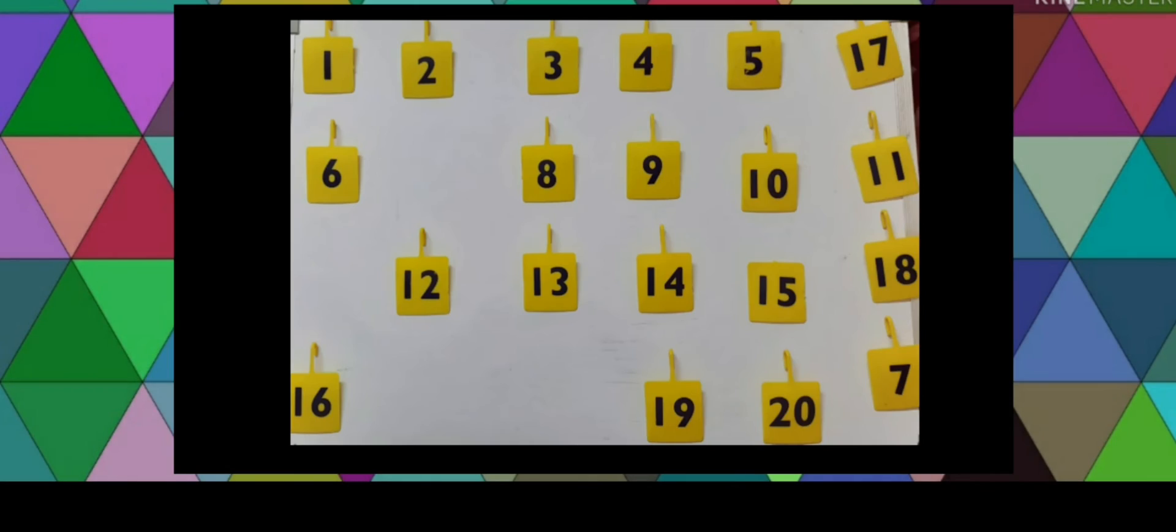One of you is going to close the eyes and the other one is going to remove few numbers from the sequence. Let the other person guess the number and put the correct number in correct sequence. Likewise, each one of you will get their turn and in the end you count the number of correct answers you have given.